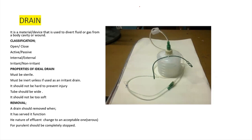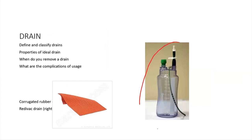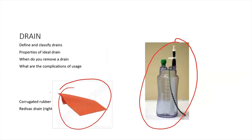Remove a drain when the nature of the effluent changes — for example, if initially draining a purulent effluent and it becomes sterile, or if a bloody effluent becomes serous. One image shown is a redivac drain — a closed, active drain. Another type is the corrugated drain, which is an open, passive drain.